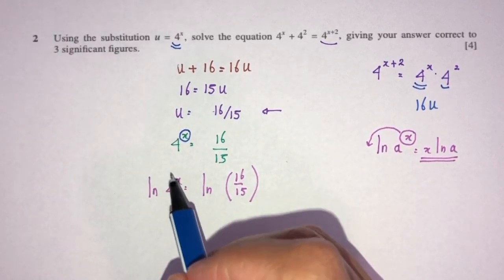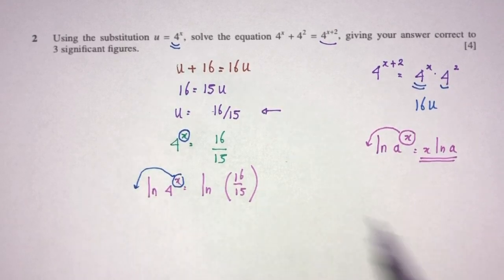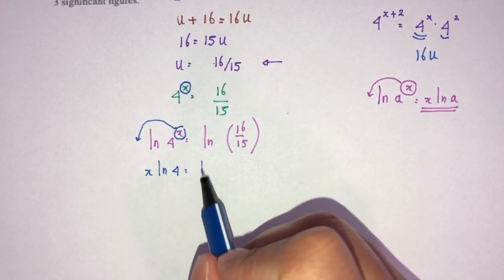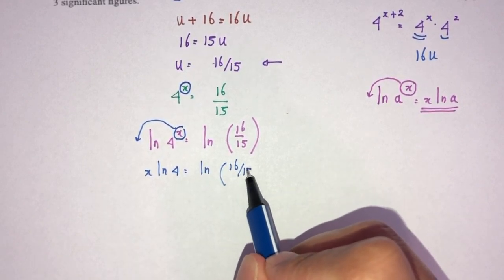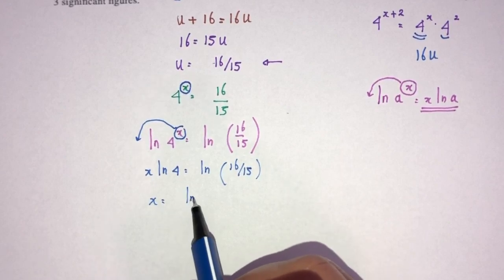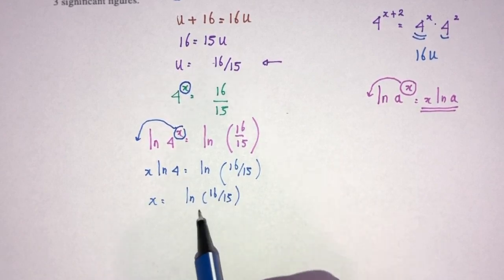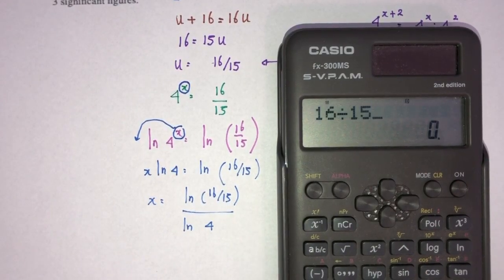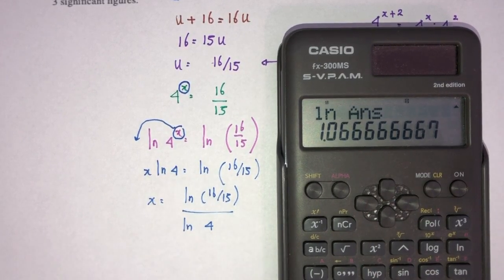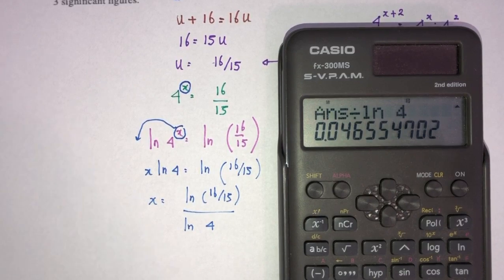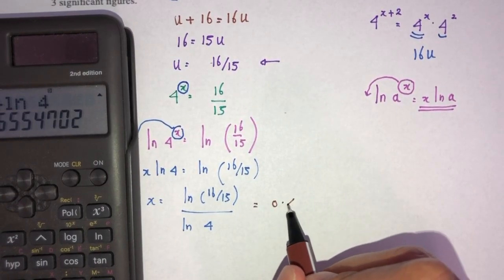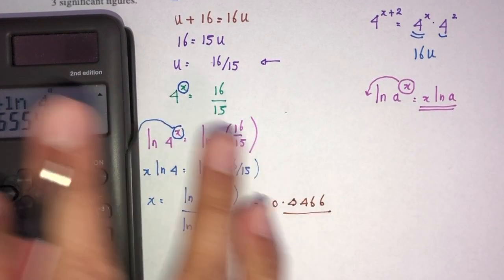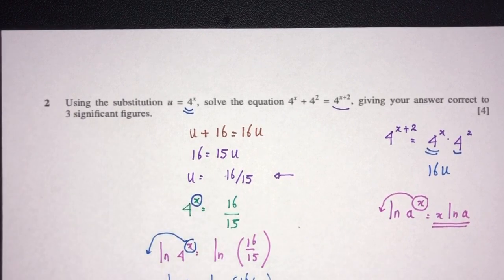Now let's bring this down because we are trying to find that value. That will become x times ln of 4 equals ln of 16 over 15. Therefore x will simply be ln(16/15) divided by ln(4). So ln of 16 divided by 15, divided by ln of 4, that should be 0.0466, correct to 3 significant figures as required by the question. That's question number 2.